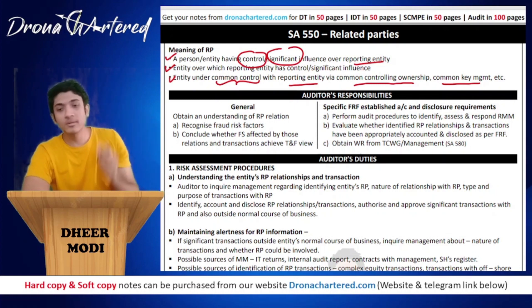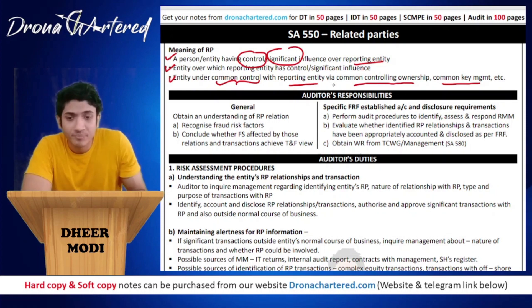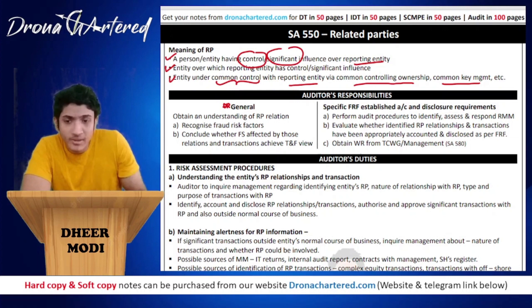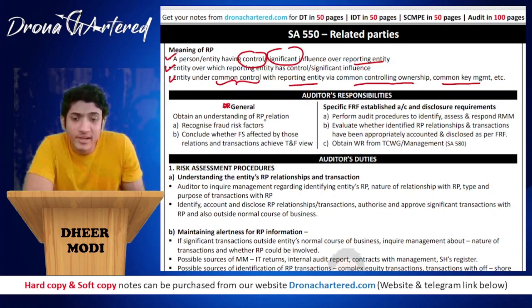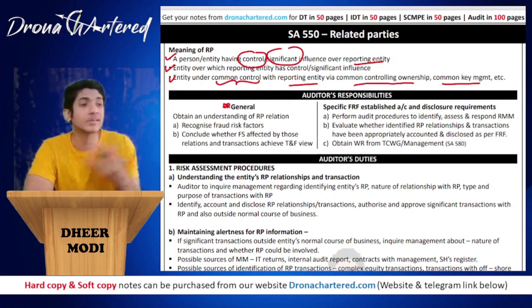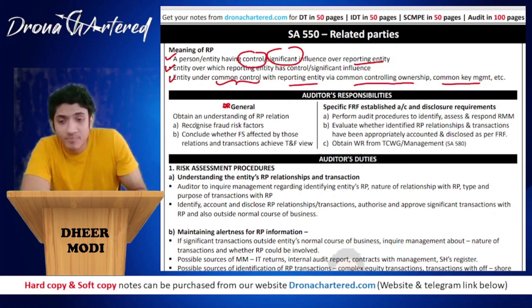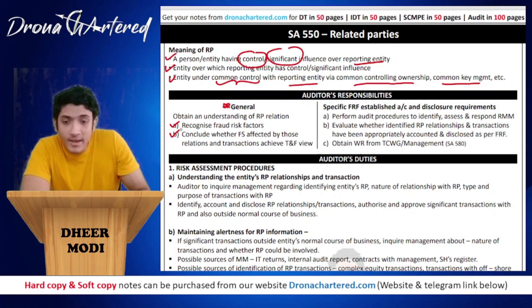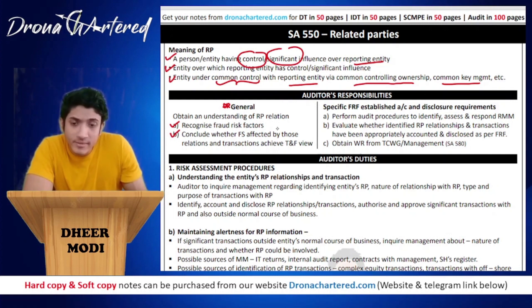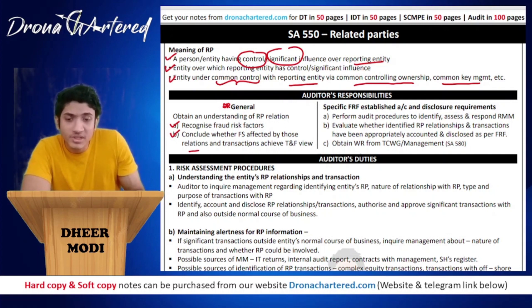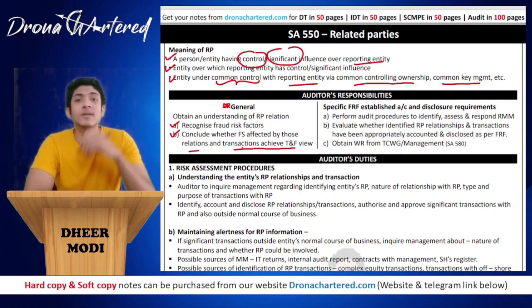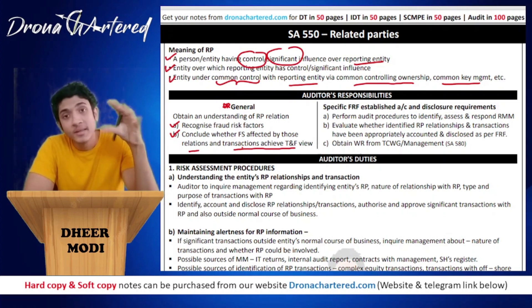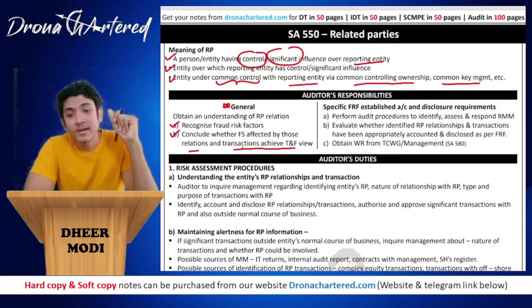Now, what are the auditor's responsibilities? The auditor's general responsibilities are: first, obtain an understanding of related party relationships — you need to understand how parties are related to each other. Second, recognize fraud risk factors as to where fraud can happen. Third, conclude whether the financial statements are affected by those relationships and transactions, and whether the transactions result in a true and fair view.